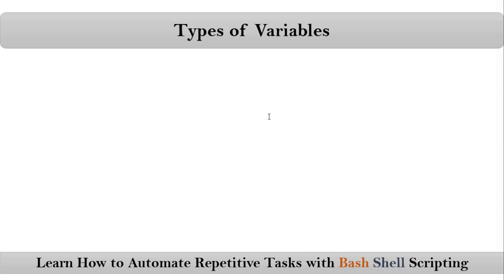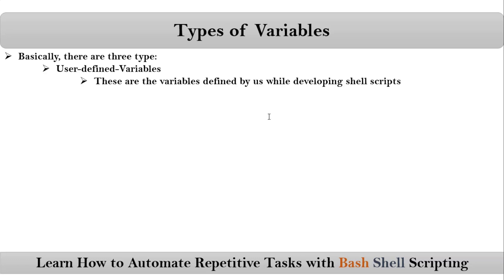Here we are talking about types of variables. Basically there are three types of variables in shell scripting. The very first one is user-defined variables — we already know about it. User-defined variables are the variables which are defined by us while developing shell scripts. We already defined user-defined variables while discussing the introduction to variables; they are like A, B, C, D, E, X — something like that.